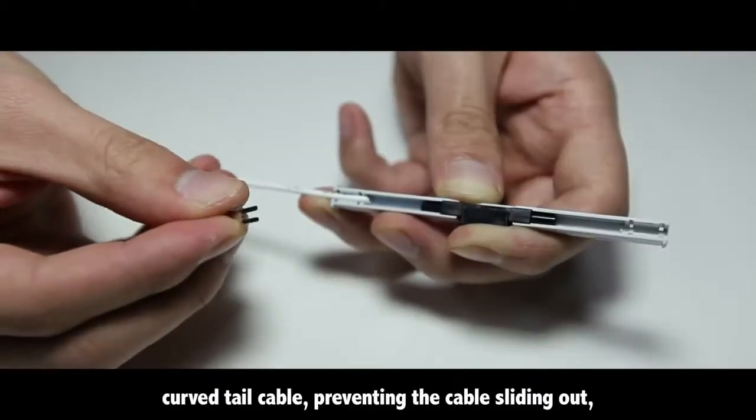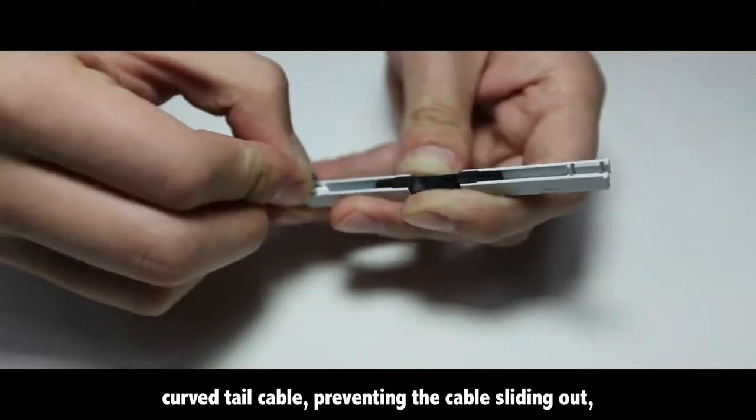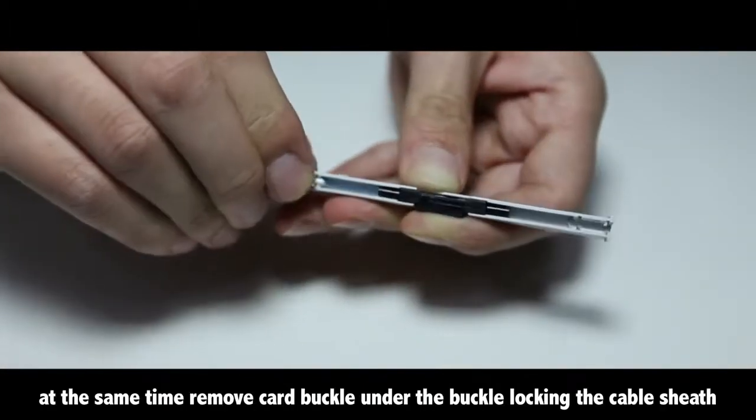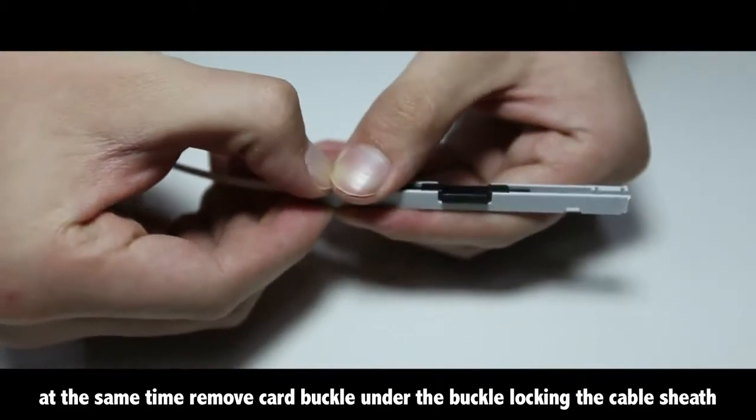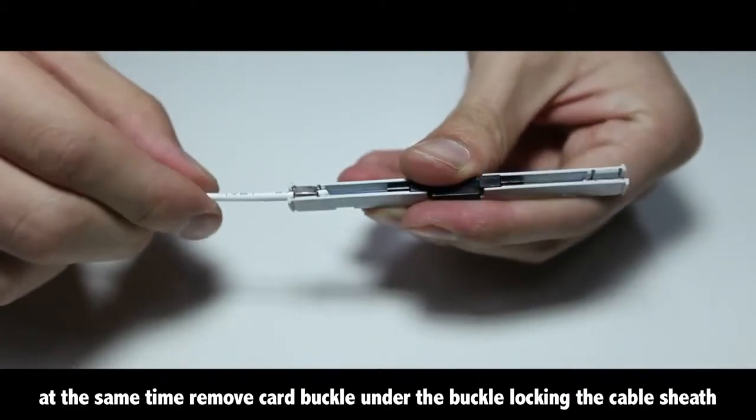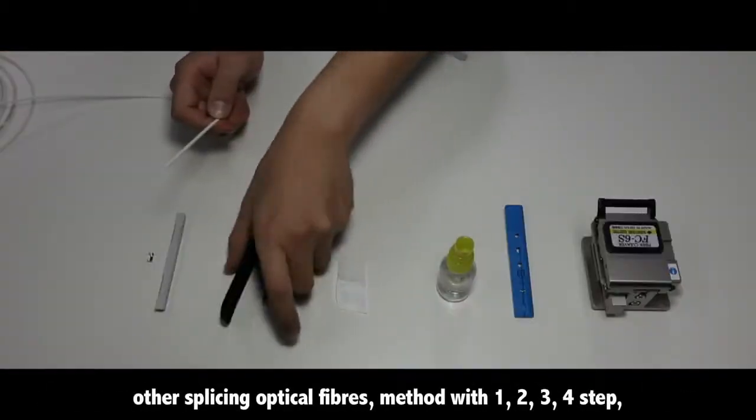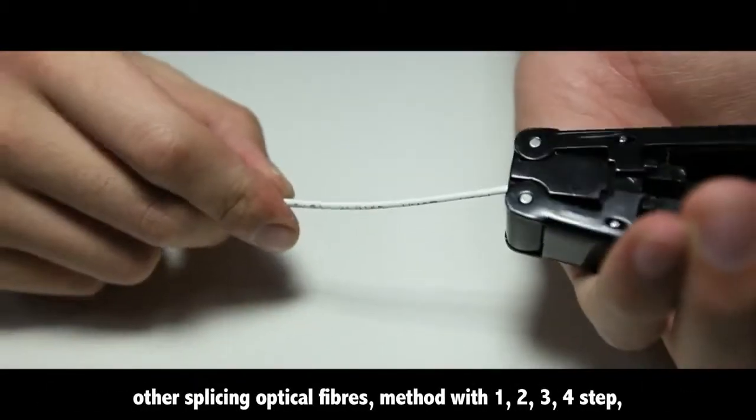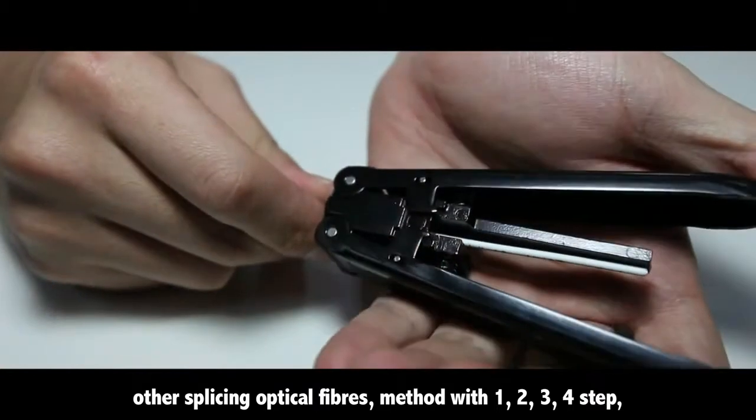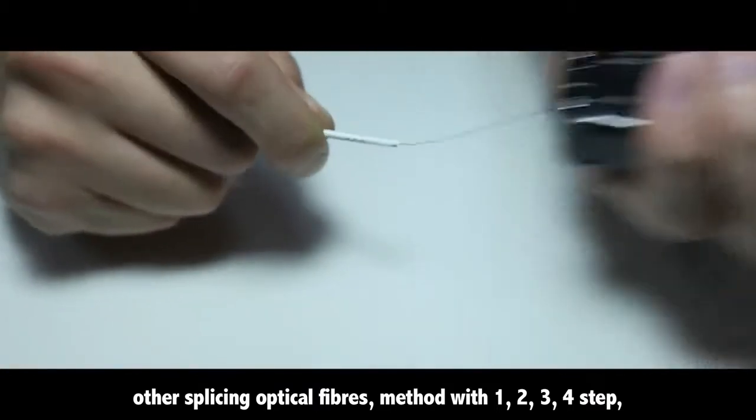Insert the prepared fiber into the covered coat until the cable sheath incision is close to the leather seat stop bits. Curve the tail cable to prevent the cable from sliding out. At the same time, remove the card buckle and press the buckle to lock the cable sheath.